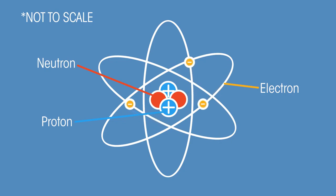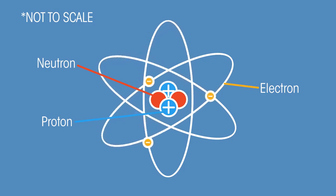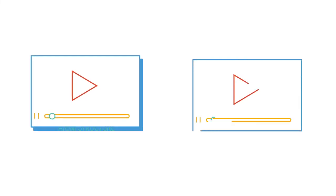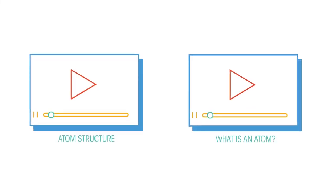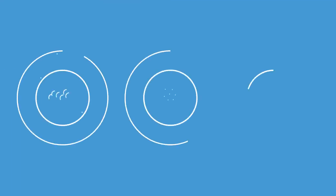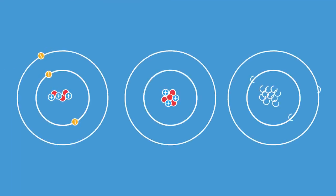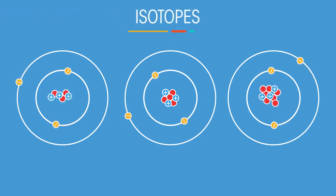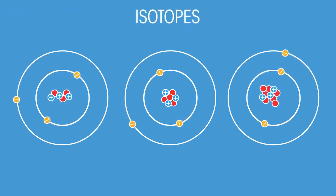You've looked at atoms from a chemistry point of view, but we also cover them in physics too. You should already know all about the structure of atoms, but if you've forgotten, you may want to watch these videos first. In this video, we're going to look at different forms of an atom called isotopes.